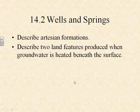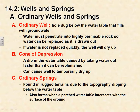Today we're going to understand and describe what an artesian formation is, and describe two land features produced when groundwater is heated beneath the surface, whether from active magma or just regional metamorphism. Let's get started.